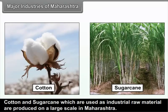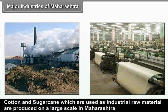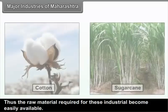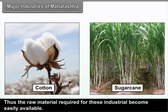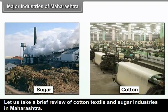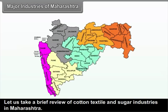Cotton and sugarcane, which are used as industrial raw materials, are produced on a large scale in Maharashtra. Thus, the raw material required for these industries becomes easily available. Let us take a brief review of cotton textile and sugar industries in Maharashtra.